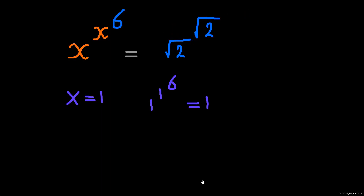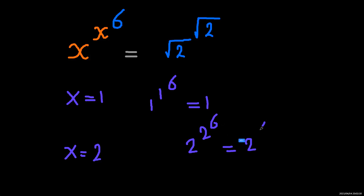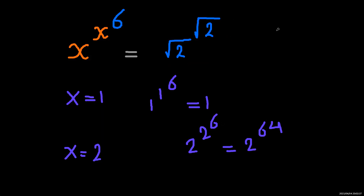Now, what if x equals 2? The left-hand side becomes 2 to the power of 2 to the power of 6, which is 2 to the power of 64 — way more than the right-hand side.